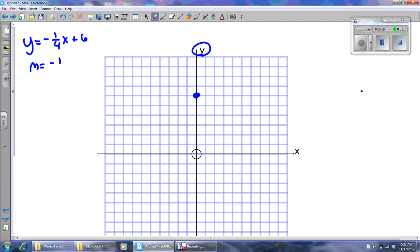Remember, the slope could be negative 1 over positive 4, or it could be 1 over negative 4. It cannot be both negative, because if it were both negative, the negatives would cancel each other out, giving me a slope of positive 1 and 4, and we know that's not right. Okay, so I'm going to go down 1, and then right 1, 2, 3, 4.